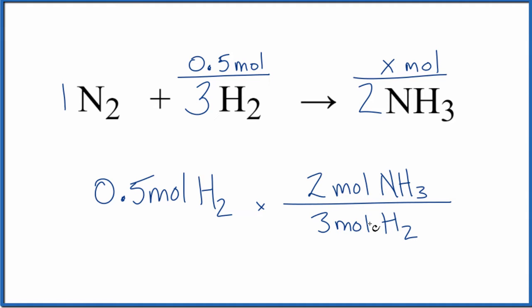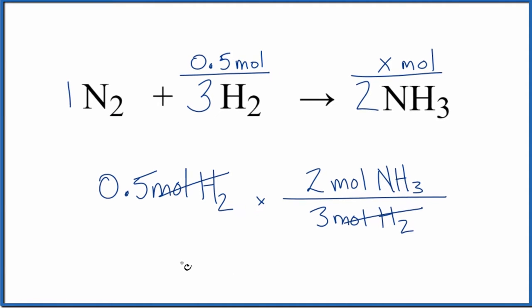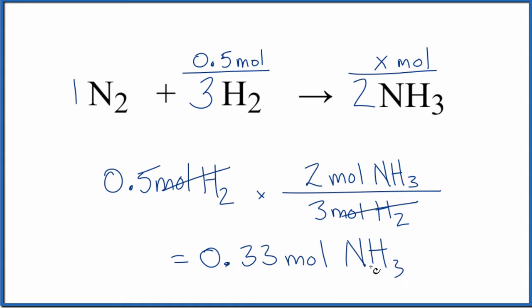And we want moles H2 on the bottom, because then we can cancel it out. So we're just multiplying 0.5 times two over three. We end up with 0.33 moles of NH3, and that's what we found when we just used the ratios here.